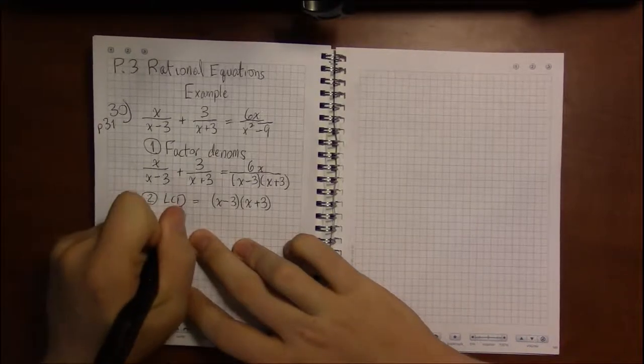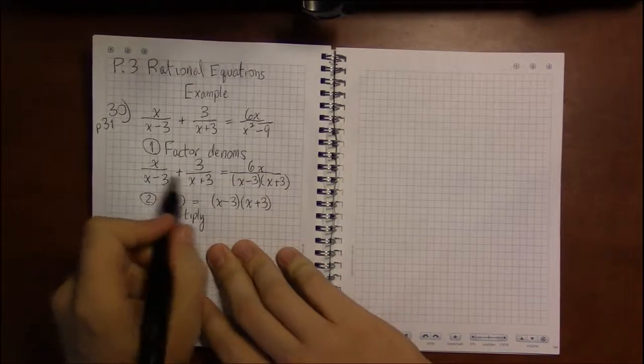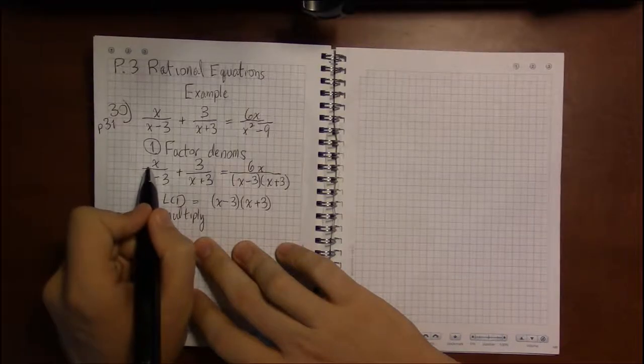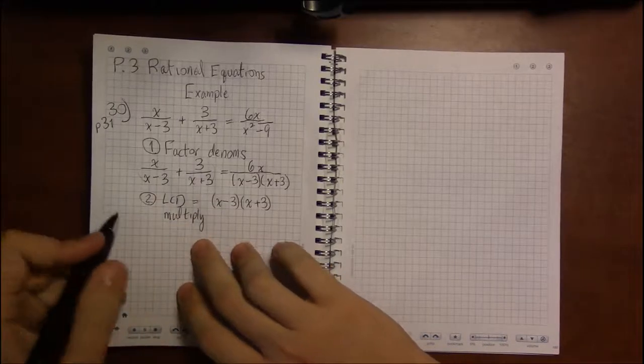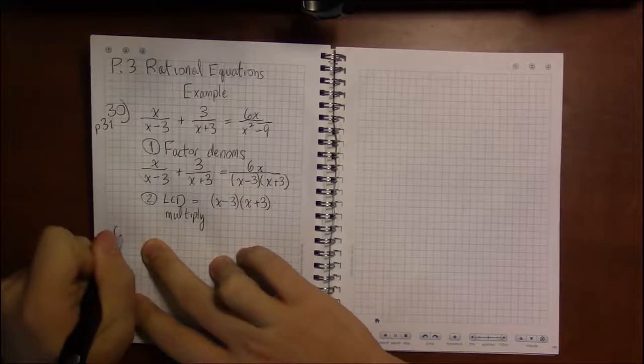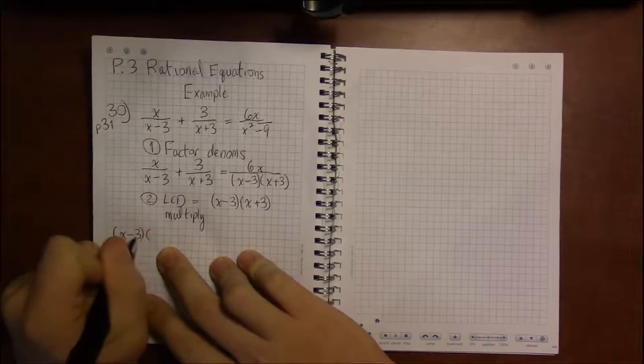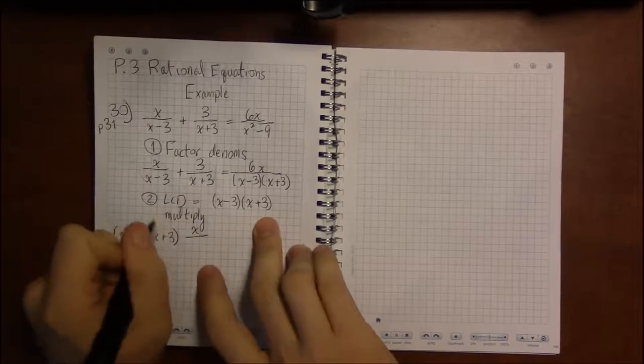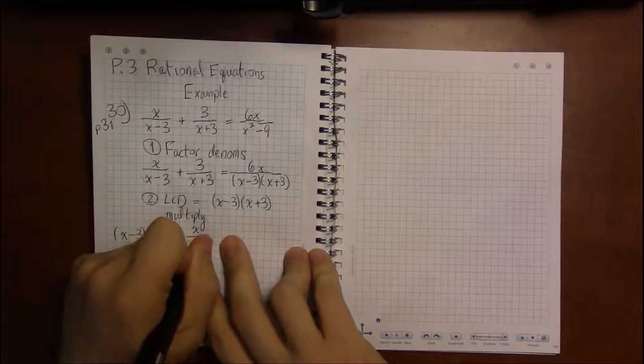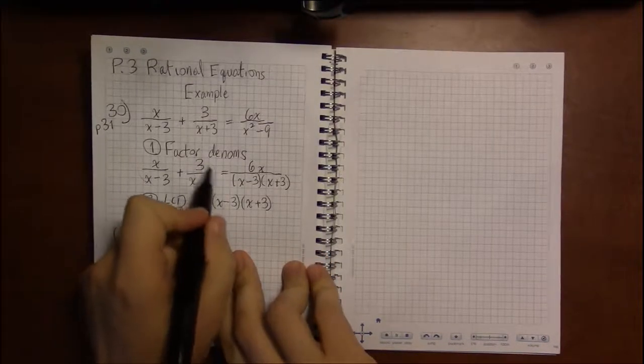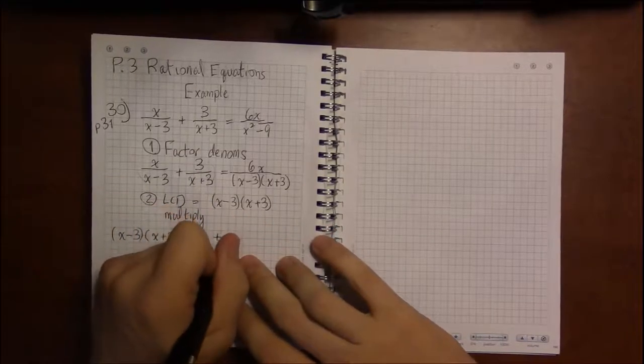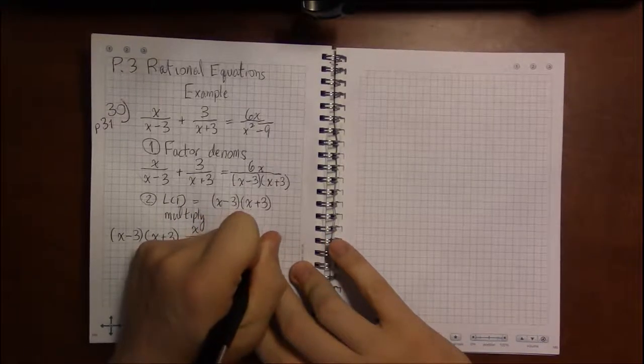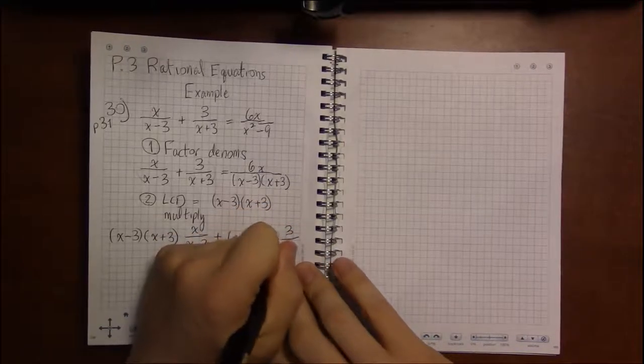And we're going to multiply both sides by the least common denominator. So multiplying the left means distributing the LCD to the first and the second terms. So we're going to multiply x minus 3 times x plus 3 to both terms on the left. We're going to do x minus 3 times x over x minus 3, and we're going to multiply the LCD times 3 over x plus 3. So it's going to look like x minus 3 times x plus 3 times 3 over x plus 3.